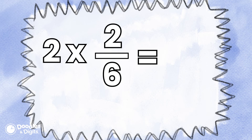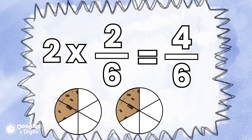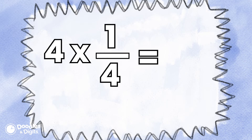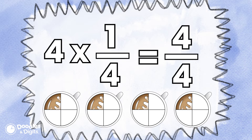Let's try a few more. Two times two sixths. We're going to first draw the model. Two times two sixths is four sixths. Four times one fourth is four fourths, or one whole.